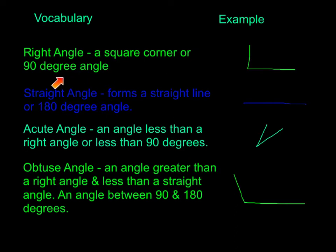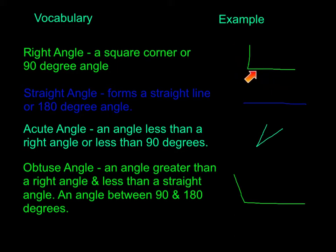A right angle is a square corner, or a 90-degree angle. Our books, our desks, pretty much a lot of the stuff we use has a right angle. A right angle may look like this, and sometimes you'll find a box in the corner to signify that it is a right angle. If it has a box in the corner, it's automatically a right angle. If it does not, there's a chance it could be close to an acute or an obtuse angle.